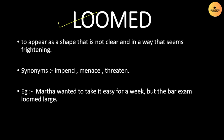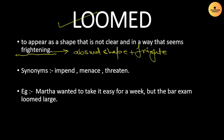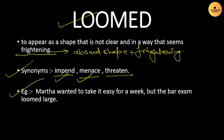Next word is 'Loomed,' meaning to appear as a shape that is not clear in a way that seems frightening. Simply put, it is something frightening or appearing in an unsettling shape. Important synonyms: impend and imminent. Example: 'Martha wanted to take it easy for a week, but the bar exam loomed large' — meaning the exam appeared frightening and large, so she feared the exam.